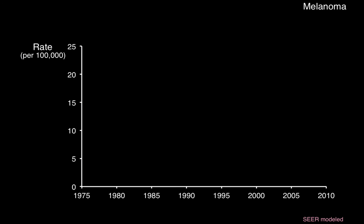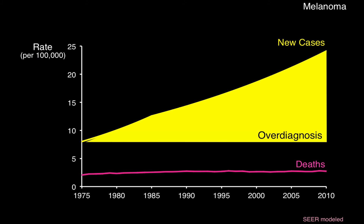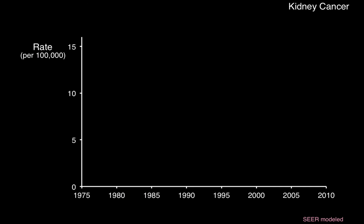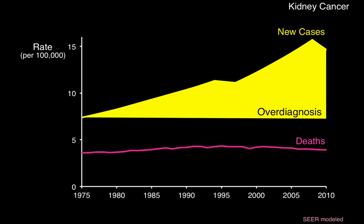And it's not just thyroid cancer. Melanoma has increased about three-fold over the same period, but the death rate is roughly stable — again, a lot of over-diagnosis. Kidney cancer, or renal cell carcinoma, has doubled in incidence over this period while its mortality rate is stable. Again, a lot of over-diagnosis — many people receiving nephrectomy for a cancer that was never going to bother them.